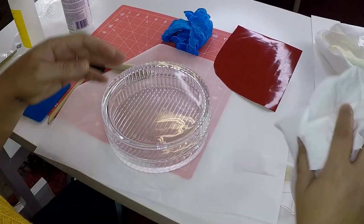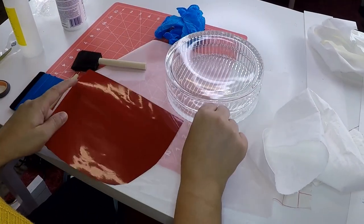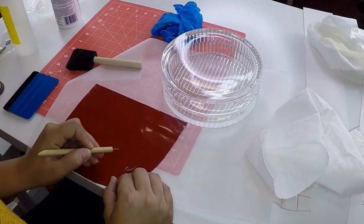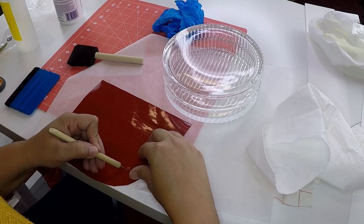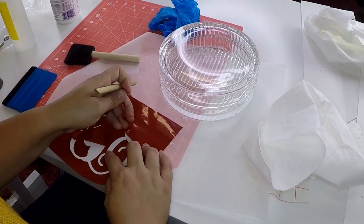So now that that is clean we're going to take and weed our vinyl which because we want the monogram to be the part that's etched on there we're going to remove the inner just the letters and leave everything else around it. So that way that is what is going to show.